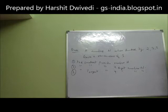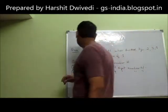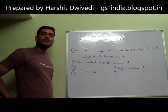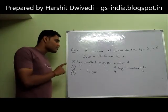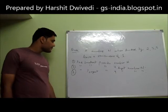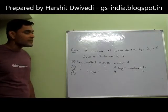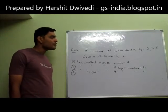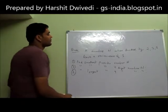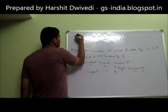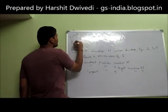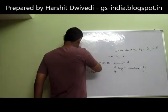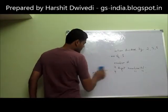I will again repeat the question for you. A number N when divided by 2, 3, 5 leaves a remainder of 1. The first question is find the smallest possible number N. The second question is find the smallest possible 4-digit number N. And the third question is find the largest possible 4-digit number N divided by 2, 3, 5 with remainder 1. You can jot down the question.